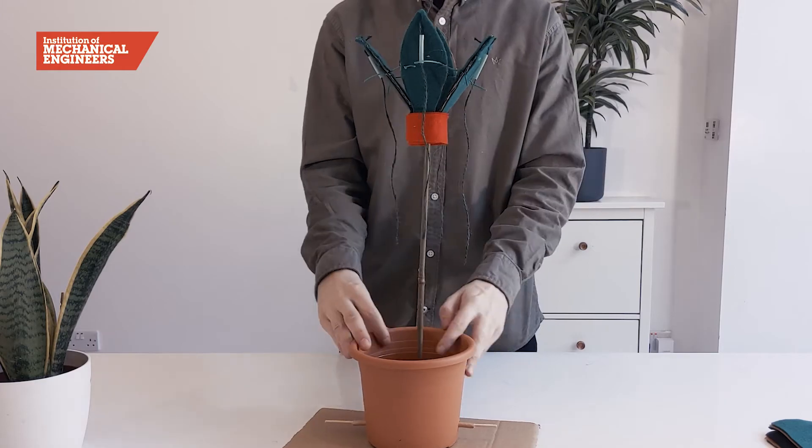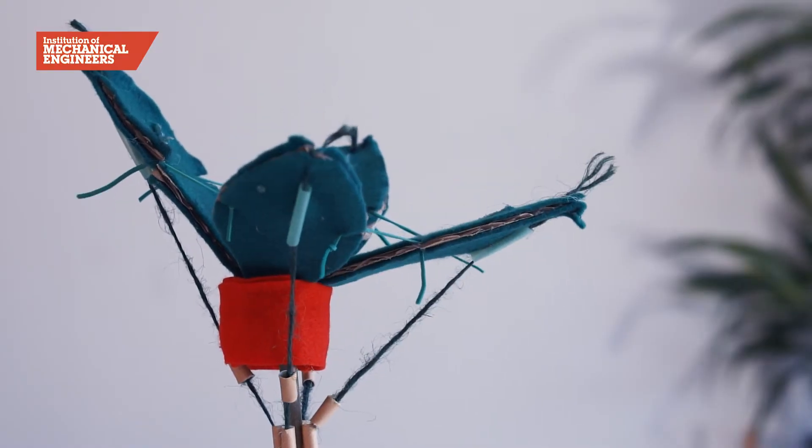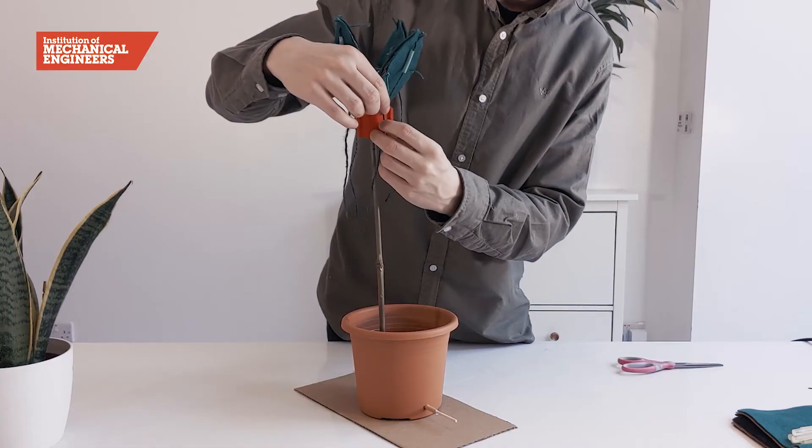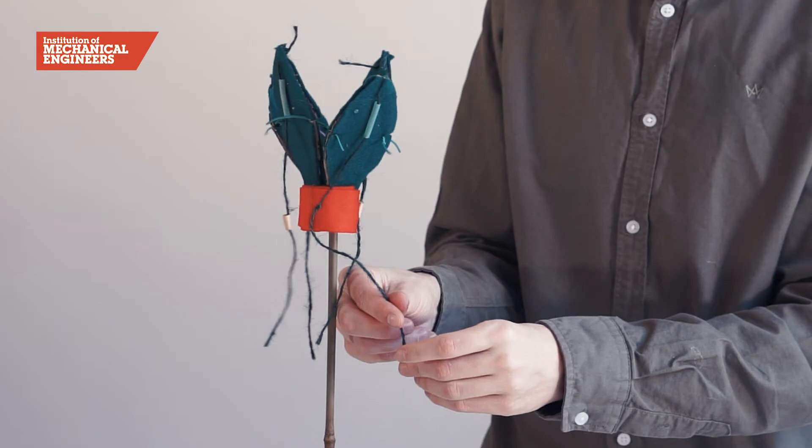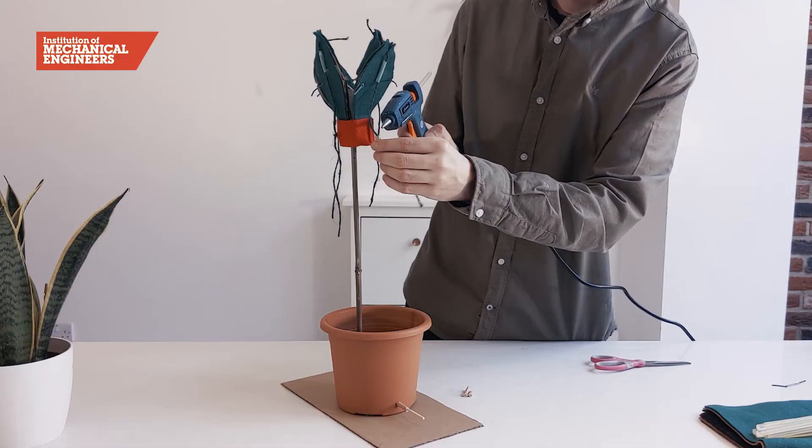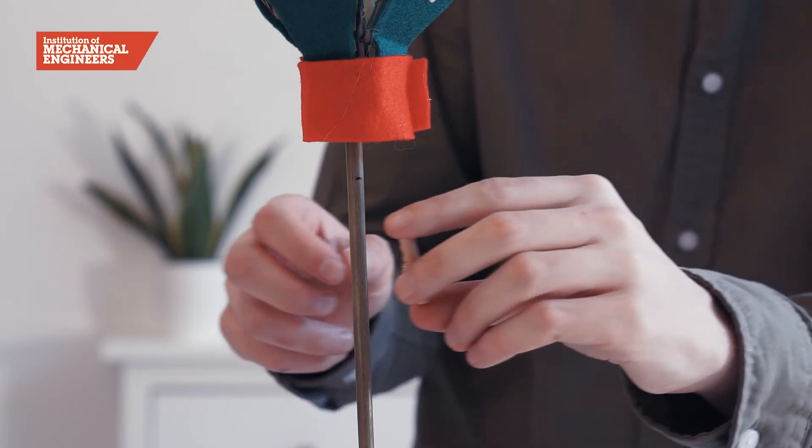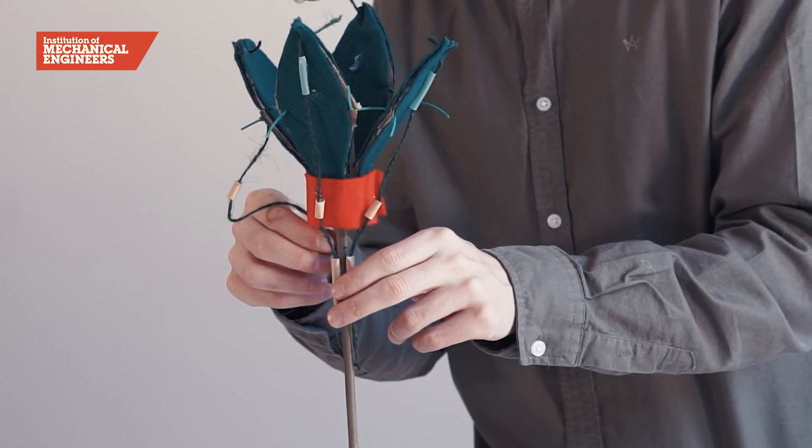We will now create a stopper system that will prevent the flower from opening too widely. First, tie a large knot in each of the four strings. Then, thread a piece of straw over the knot and glue it in place. Sticking four pieces of straw to the stalk will provide a narrow opening which the stopper will be unable to pass through.